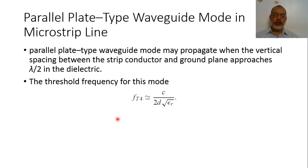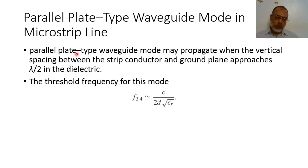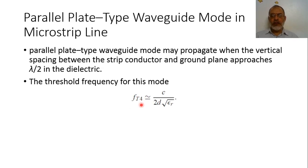Another mode which can operate in a microstrip line is the parallel plate waveguide mode. This may propagate when the spacing between the strip and the ground is nearly lambda/2. This is a very rare situation because usually the substrate thickness is very small. If it does occur, the threshold frequency is F4 = c / (2D × sqrt(epsilon_r)). We generally do not reach this frequency in operating microstrip lines.